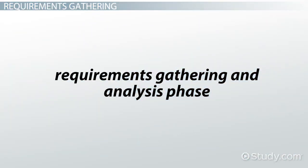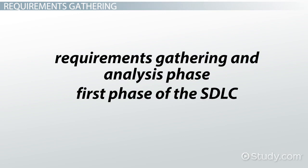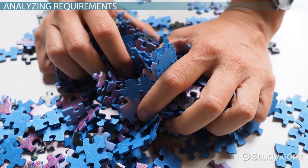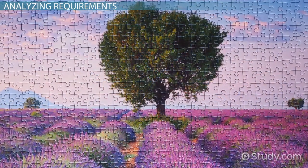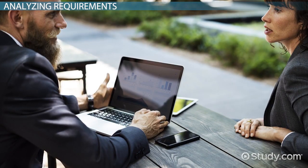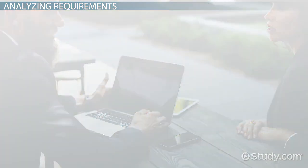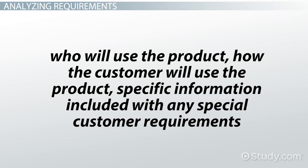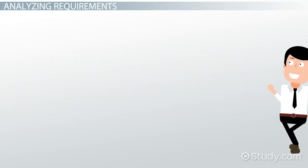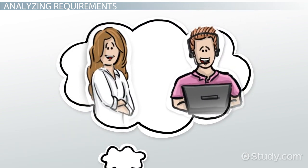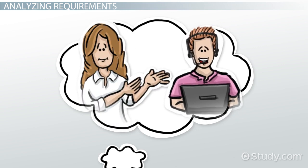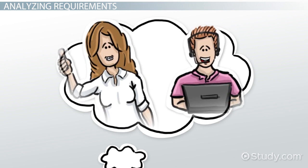The Requirements Gathering and Analysis phase is the first phase of the SDLC. Gathering requirements is the most important part of the SDLC for project managers and internal stakeholders. During this phase, the customer states the expectations of the project, including who will use the product, how the customer will use the product, and any special customer requirements. The customer meets with business managers and analysts to provide requirements, as this information is critical to developing the product the customer requests.